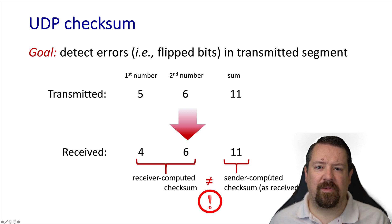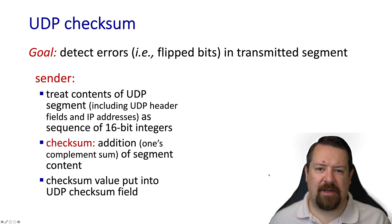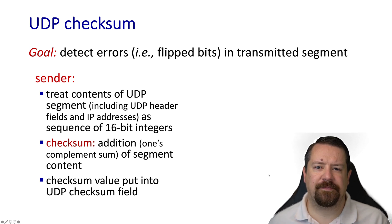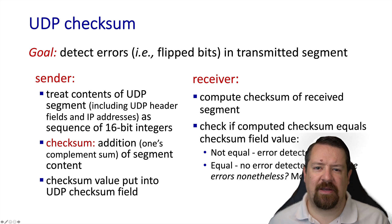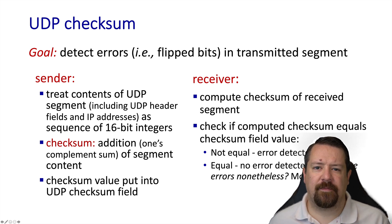Note that the receiver has no way to tell which number changed — it could be either the first number or the second number, or the checksum itself. So all the receiver can do is say this data is bad and throw it out. UDP does this by treating all of the values of the header and the payload as a series of 16-bit integers, adding them up using one's complement arithmetic, and putting the result into the 16-bit UDP checksum field. The receiver performs the same computation and checks to see if it matches what it received. If the values don't match, then it detects an error — it won't know if that error is in the header, the message, or the checksum field itself. Also note that it's possible for errors to be introduced that fool this type of checksum such that the checksum is still correct even though errors are present.